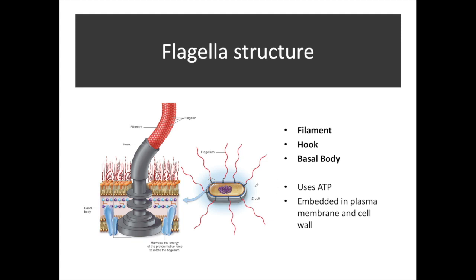Here's our flagella structure. This is what we call a peritrichous type of microorganism. E. coli is covered in flagella — it has lots of them. Bacteria that are motile, meaning they have motility, will have flagella, and flagellated movement is how they work. The flagella has three components: a filament, a hook, and a basal body. The filament is composed of a protein called flagellin. This protein is bacteria-specific — human cells and eukaryotic cells do not produce flagellin. This will become important when we look at immunology, because our immune system recognizes flagellin as foreign and can tell that a bacterial cell is present. So bacteria use the protein flagellin to create the filament.